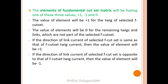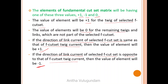The elements of the cut set matrix have only one of these values: +1, −1, or 0. The value is +1 for the twig of the selected F cut set. If the direction of a link current of the selected F cut set is the same as the F cut set twig current, the element is +1; if opposite, it is −1. Elements are 0 for remaining twigs and links not part of the selected F cut set.